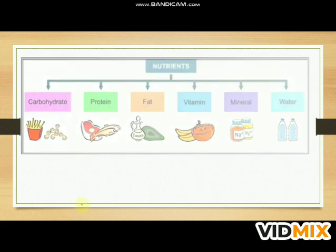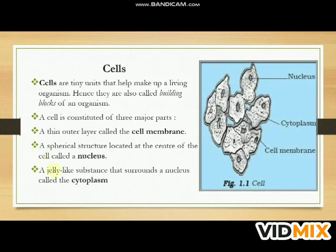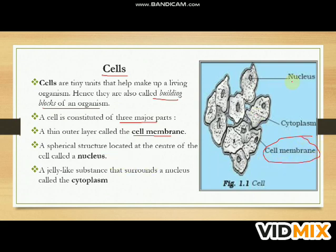Next is the cell. Cells are tiny units that help make up living organisms; hence they are also called the building blocks of an organism. A cell is constituted of three major parts: a thin outer layer called the cell membrane, a spherical structure located at the center of the cell called the nucleus, and a jelly-like substance that surrounds the nucleus called the cytoplasm.